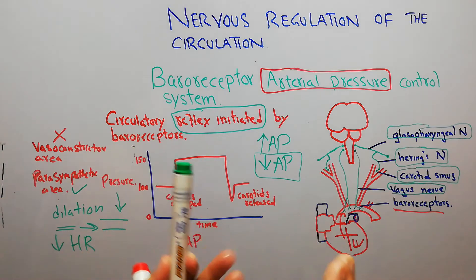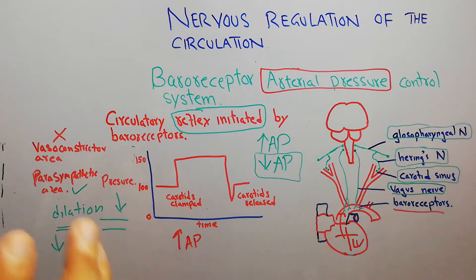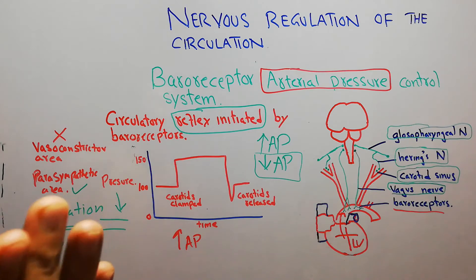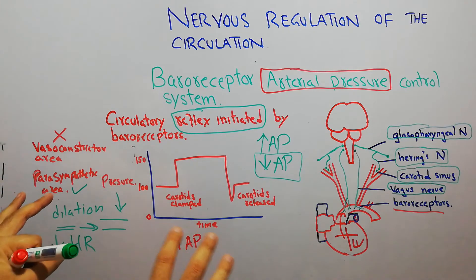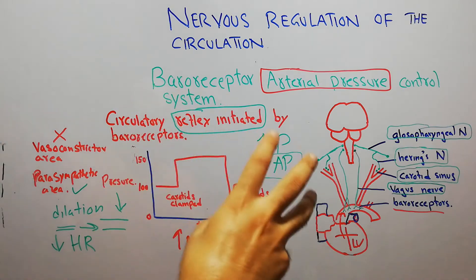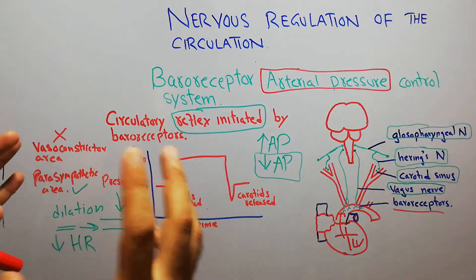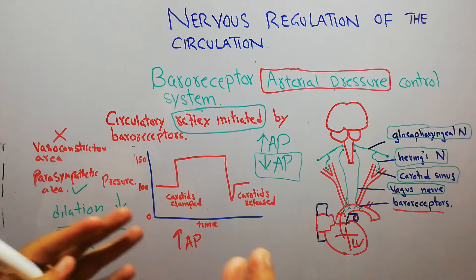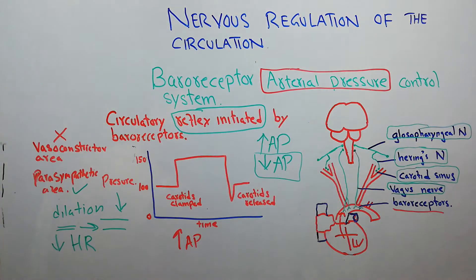In the vasomotor center, which controls vasoconstriction, vasodilation, and the increasing and decreasing of heart rate, it is also present in the brain and is also influenced by the higher centers. Overall we are discussing the nervous regulation of the circulation, and it clearly shows the very important role of the nervous system in regulating the circulation.